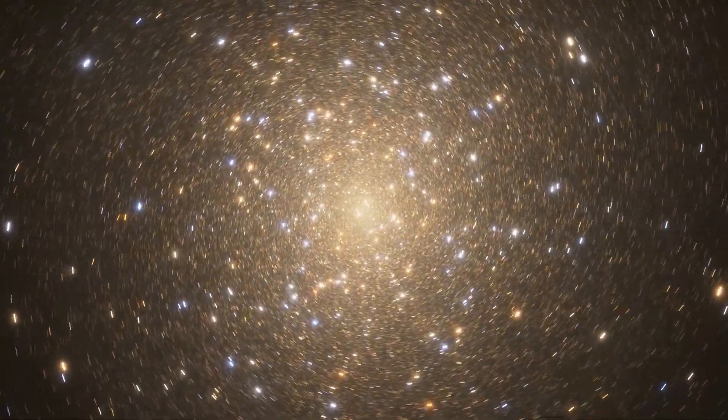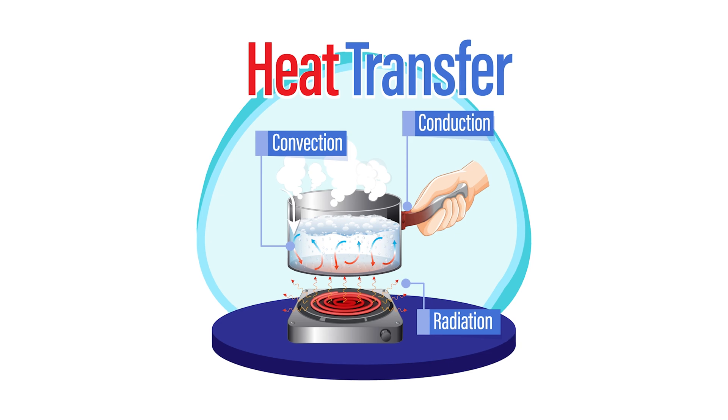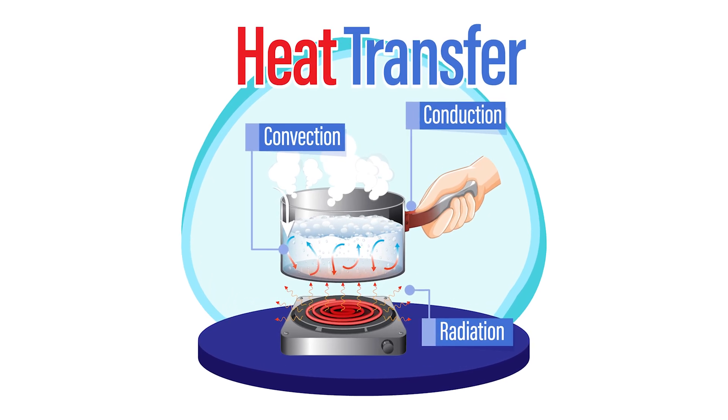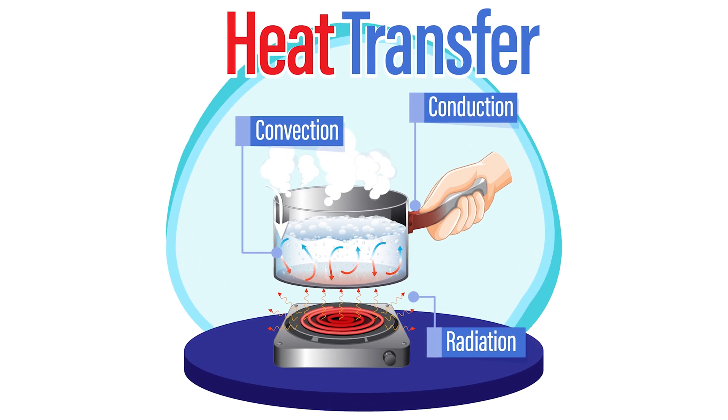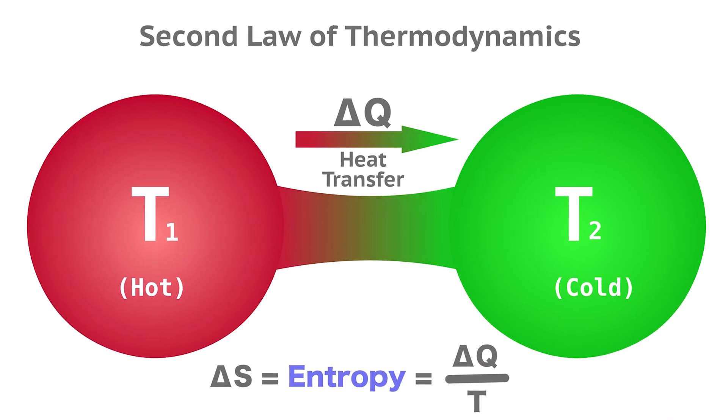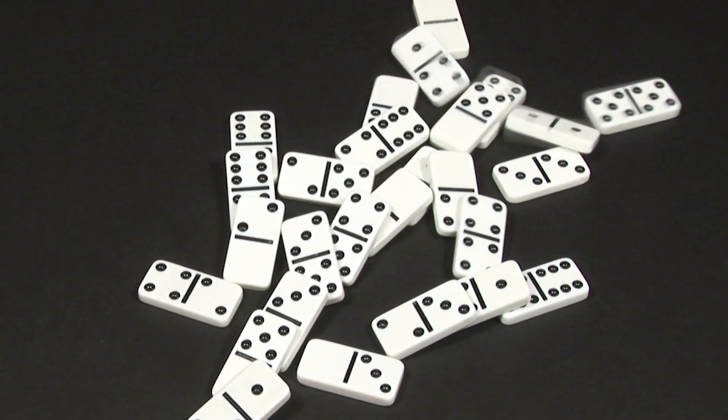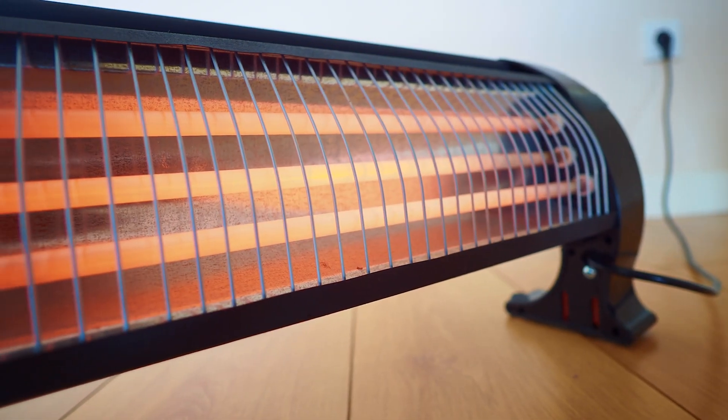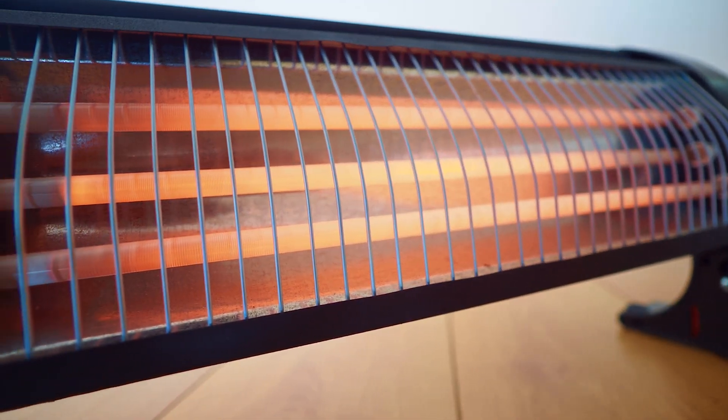The second law establishes that heat transfer from hotter to colder bodies is associated with an increase in entropy, a measure of disorder that tends to rise, illustrating the unidirectional arrow of heat transfer.